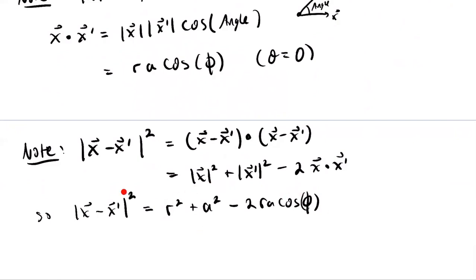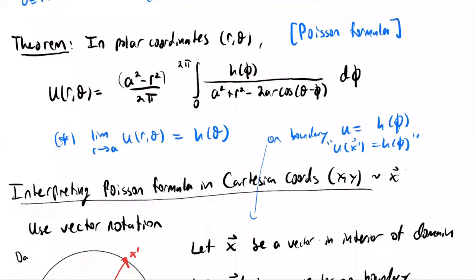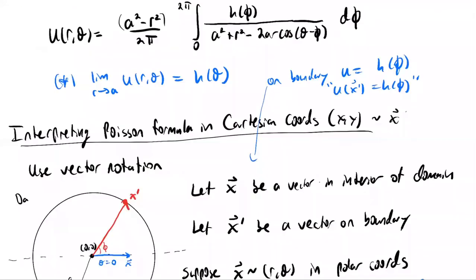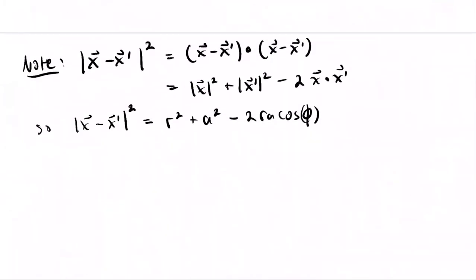Looking at the difference of the two vectors, the length squared of x minus x prime equals the dot product of the difference with itself, which expands to |x|^2 + |x'|^2 − 2(x·x') = r^2 + a^2 − 2ra·cos(phi). This is exactly what appears in the denominator of the integral, so we can replace that quantity by |x − x'|^2.